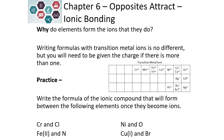Let's look at chromium with a plus three charge. Chloride, based on its position on the periodic table, is a minus one. It's going to take three chlorides to balance the charge of the chromium. So we would get CrCl₃.